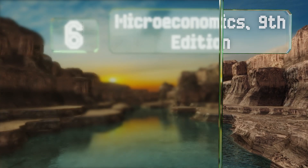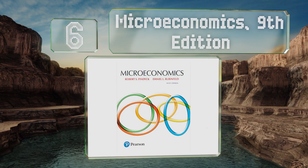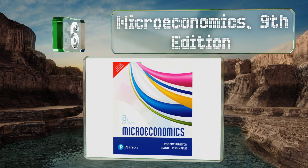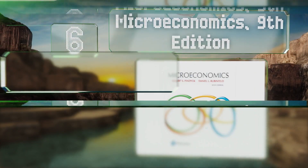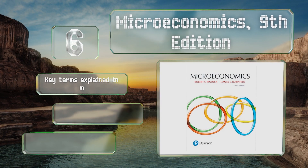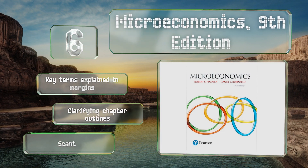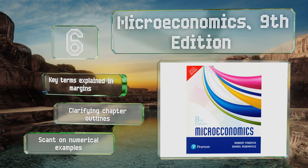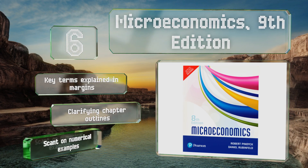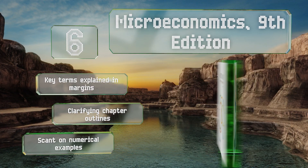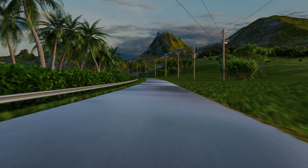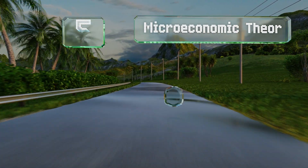Moving up our list at number six, for insight into what drives public policy formation and managerial decision making, you may want to take a look at Microeconomics Ninth Edition. Its extended examples, clear visuals, and deft handling of modern topics make it a good tool for absorbing the fundamentals. Key terms are explained in the margins and it includes clarifying chapter outlines. However, it is scant on numerical examples.